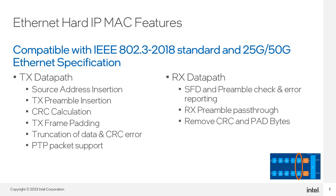The Ethernet MAC is compatible with the IEEE 802.3-2018 standard and the 25G-50G Ethernet spec. For the transmit path, standard Ethernet functionality is available such as source MAC address insertion, transmit preamble, start and SFD insertion with optional pass-through, CRC calculation, transmit frame padding to the minimum 64-byte requirement, error truncation, inter-packet gap (IPG) generation and insertion, and PTP support. For the receive path, there is SFD and preamble checking and error reporting, preamble pass-through, IPG removal, CRC checking and removal, and pad bytes removal.